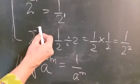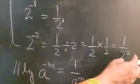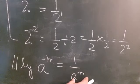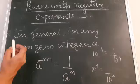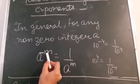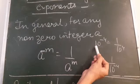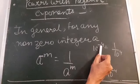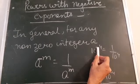For example, 2 raised to power minus 2 gives 1 upon 2 raised to power 2 — the same number but with positive integer in the denominator. So in general, for any non-zero integer a, a raised to power minus m equals 1 upon a raised to power m. For instance, 10 raised to power minus 4 equals 1 upon 10 raised to power 4.